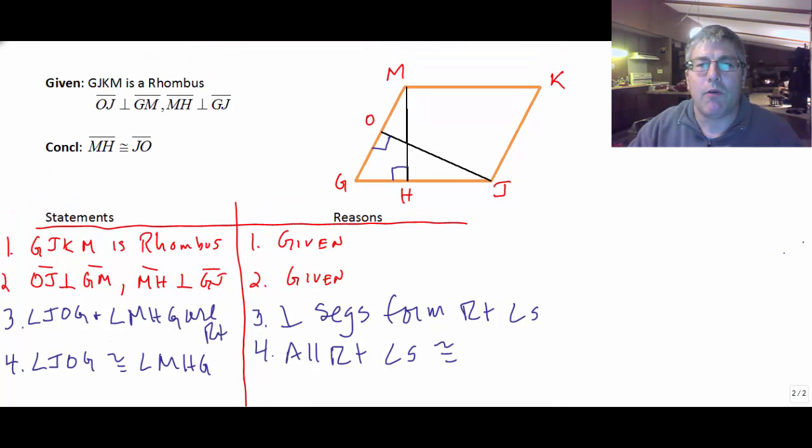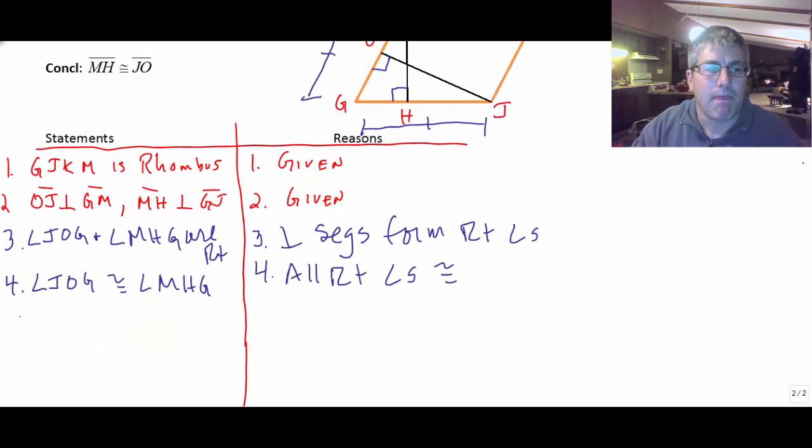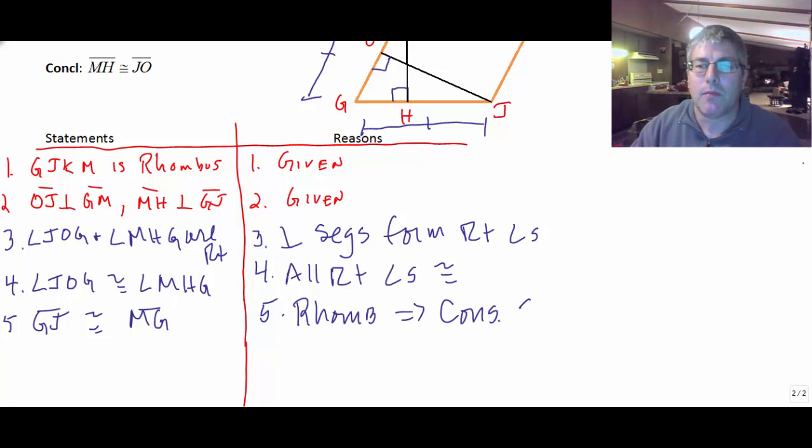Now we were given that our figure is a rhombus. Well, how is that going to help us? Well that tells us that side MG is going to be congruent to side GJ because we know that consecutive sides of the rhombus are congruent. So step five, GJ is congruent to MG. And our reason is that a rhombus implies consecutive sides congruent.